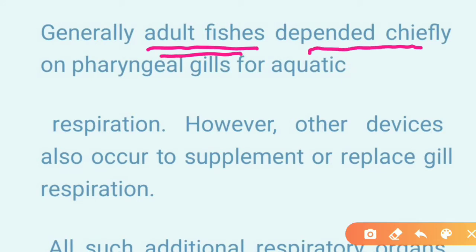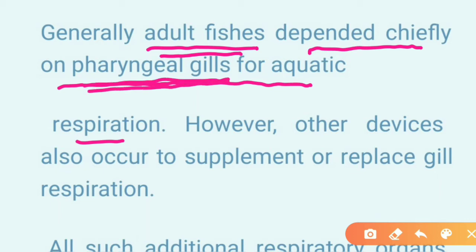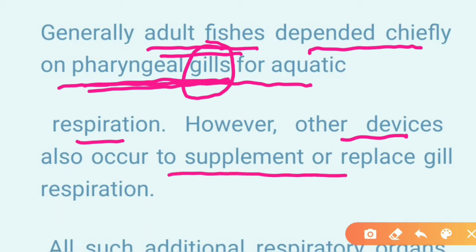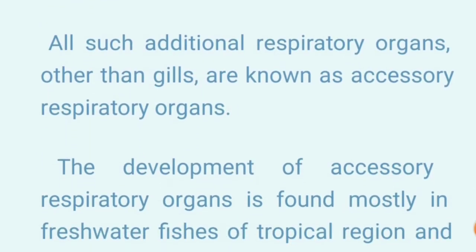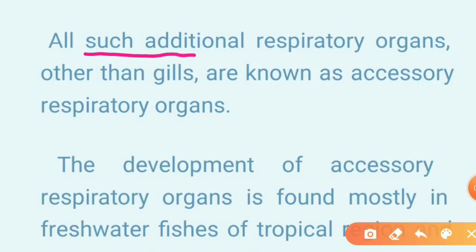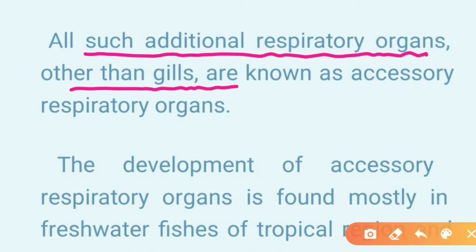Generally, most fishes are dependent on pharyngeal gills for aquatic respiration. However, some fishes possess additional structures beyond gills. These extra structures used for respiration are known as accessory respiratory organs.